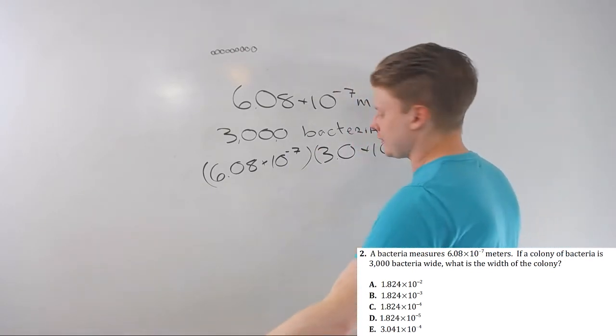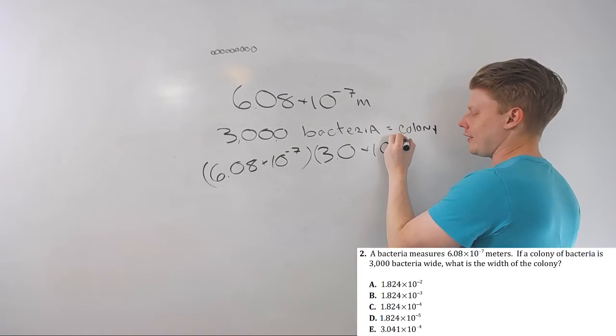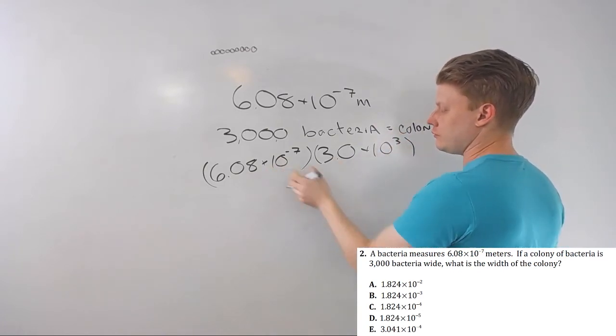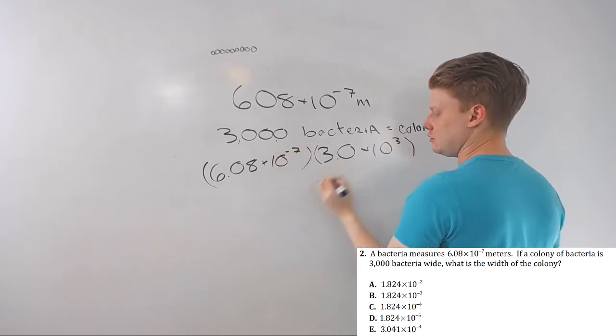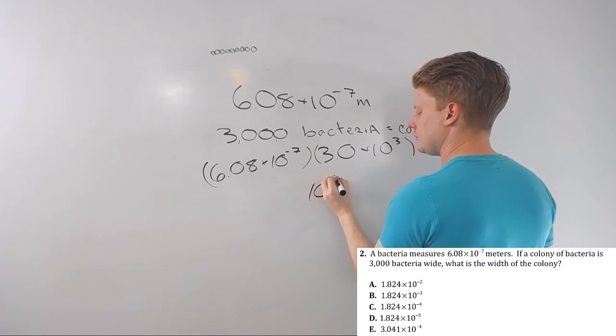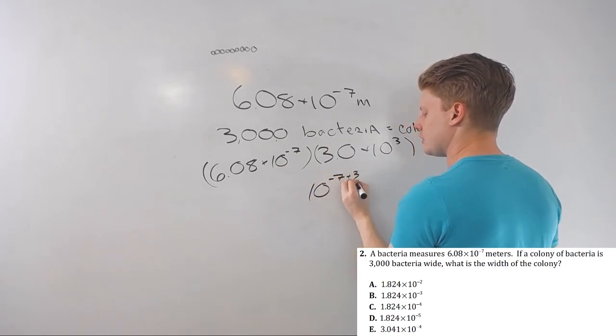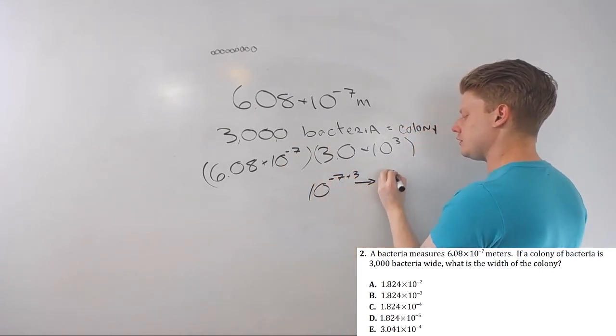So, I would multiply exponents first because that's just what I like to do. Negative seven, same base, same base, 10, 10. Negative seven times three, that's going to be addition, is the same base. So, 10 to the negative seven plus three, our new exponent is 10 to the negative four.